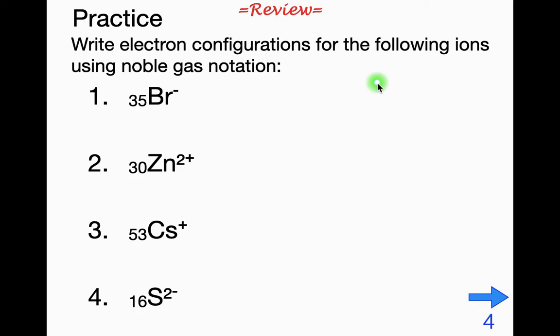Practice. Write electron configurations for the following ions using noble gas notation. And you might want to pause the video, see if you can do this yourself, and then check your answers. But I will begin giving the answers in 5, 4, 3, 2, 1, good.